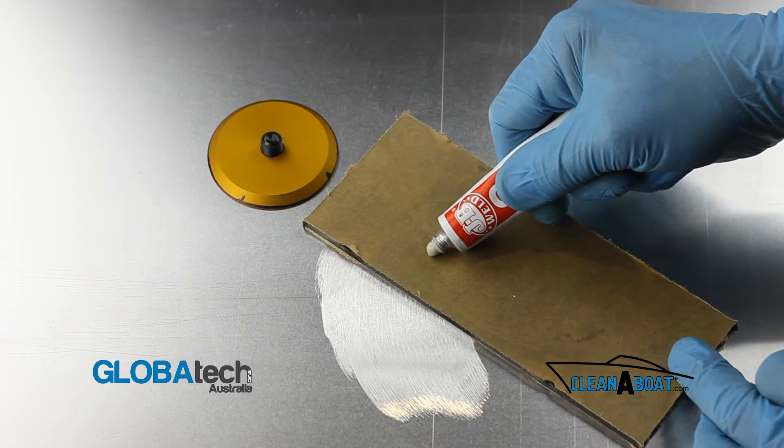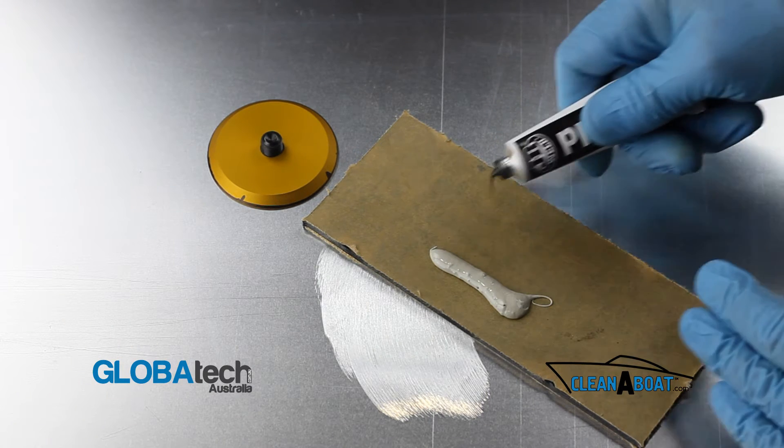Dispense equal parts of JB Weld Epoxy onto a mixing board, then mix thoroughly.